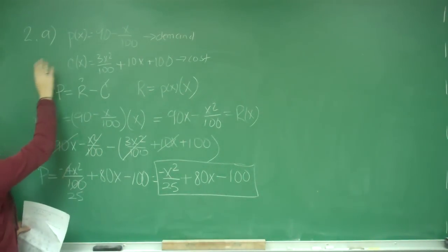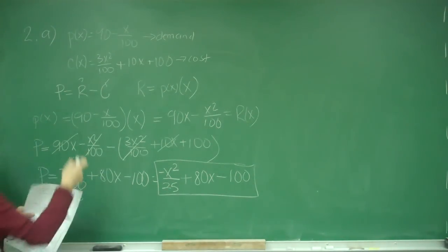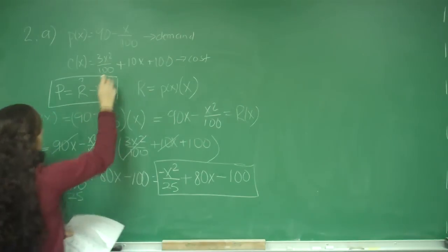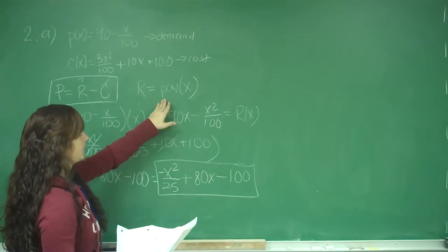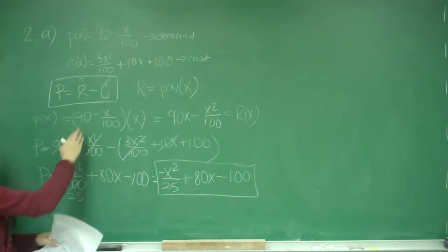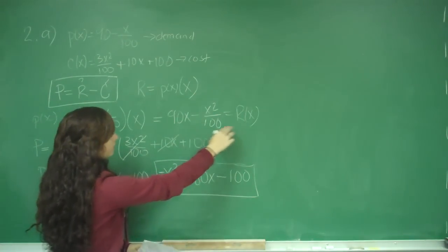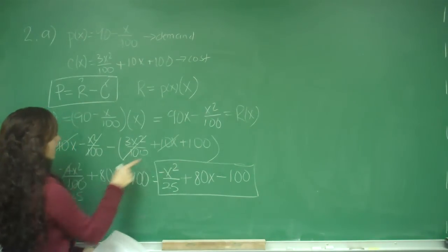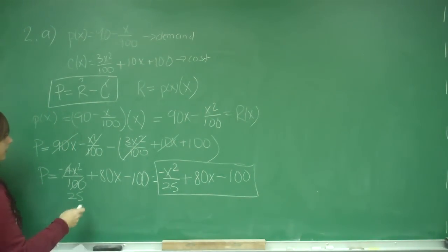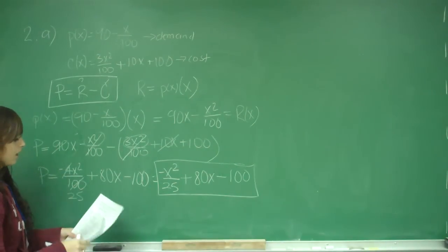So for part A, they gave us a demand function and a cost function, and they wanted us to find profit. Profit equals revenue minus cost, so we needed the revenue function, which is the demand function multiplied by x. Multiplying each term gives 90x - x²/100. We subtract the cost function and combine like terms to get the profit function.